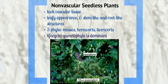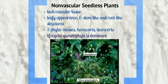Non-vascular seedless plants were around before the evolution of the vascular tissue, which allows for the transport of water and food in the plant. Because of this, they don't have true roots, stems, or leaves. Non-vascular plants often have a leafy appearance with stem-like and root-like structures. They can be classified into three phyla, which are mosses, hornwort, and liverwort.